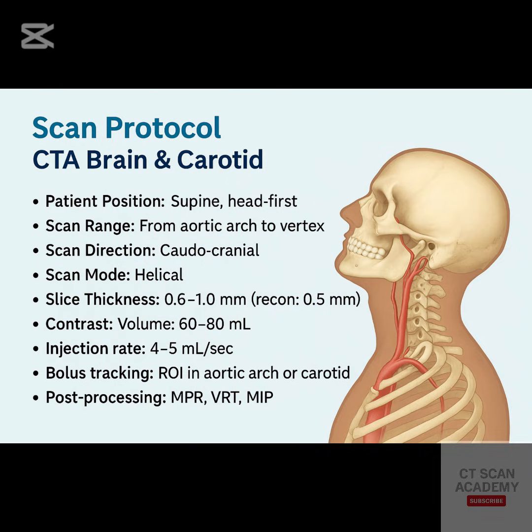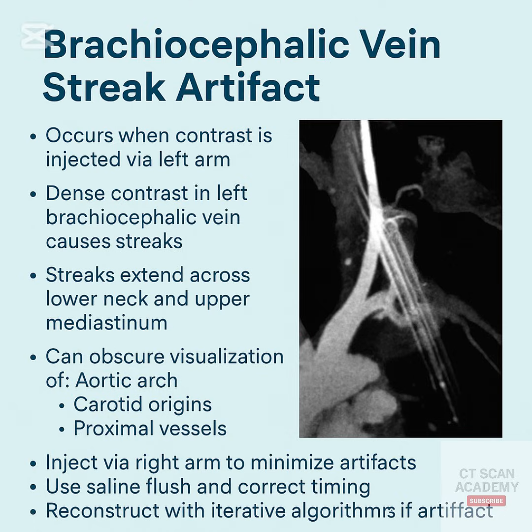An 18G green angiocatheter should be placed in the right antecubital vein. This is because contrast injection from the left arm can cause artifacts from the left brachiocephalic vein, obscuring the origin of the aortic arch.